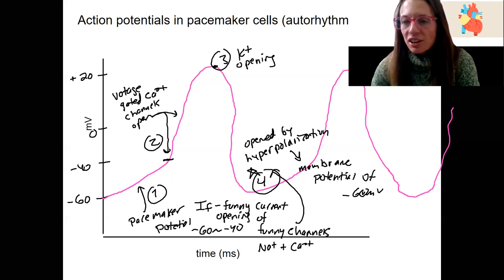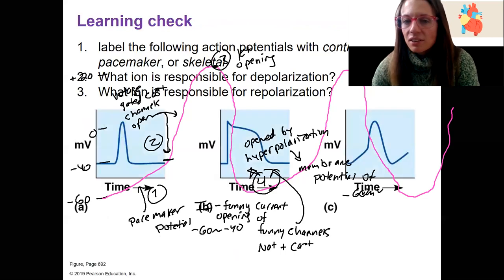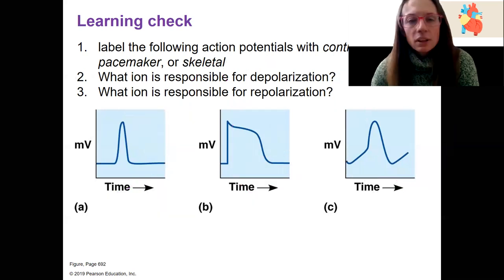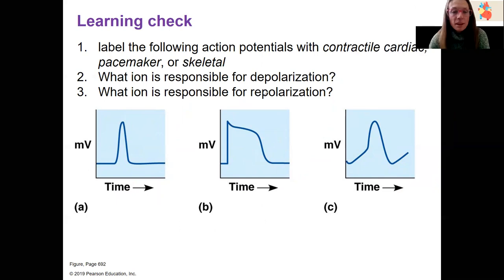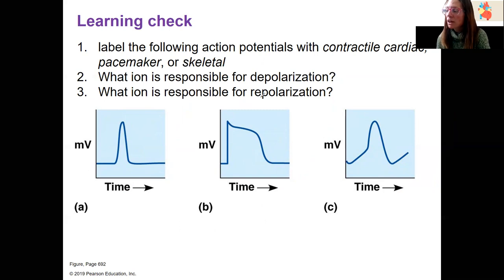Let's do a learning check. Label each of the following with contractile cardiac cells, pacemaker, or skeletal, and then identify what ion is responsible for both depolarization and repolarization in each scenario.